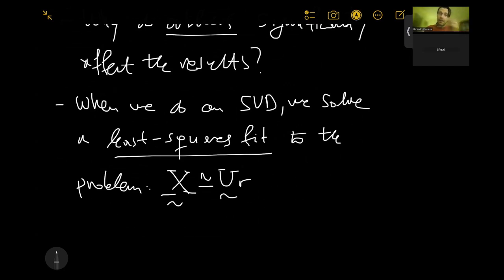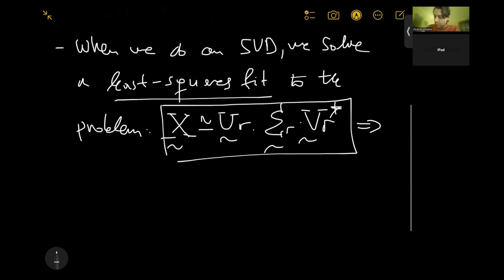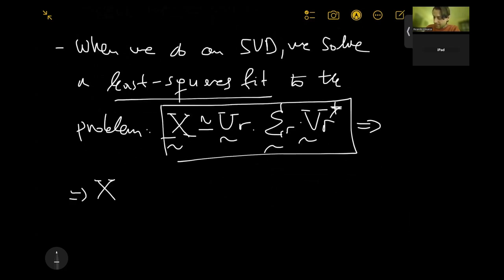And if you remember the previous videos, basically our snapshot matrix X is going to be approximated by U_R, which is the truncated left singular vector matrix, times sigma_R, which is diagonal, times V_R star. The R star will contain the right singular vectors.